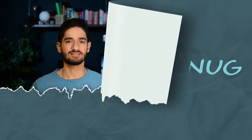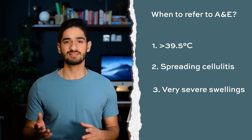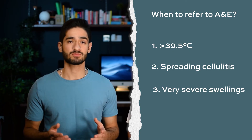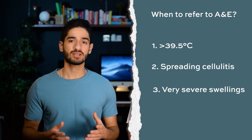Next on the list is pericoronitis and necrotizing ulcerative gingivitis. These two are grouped together because the antibiotics prescribed are the same. Pericoronitis is the one you might need to refer to A&E, and the signs are exactly the same as those discussed for abscesses. Keep in mind that because pericoronitis is at the back of the lower arch, there are many spaces the infection can spread to, so you can sometimes see very large swellings — watch out for all the signs mentioned before.